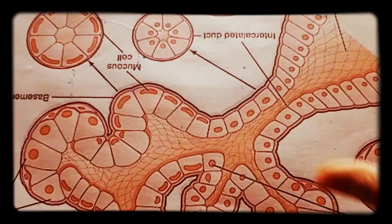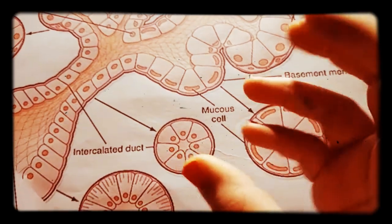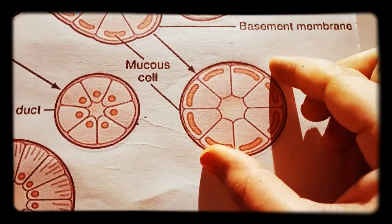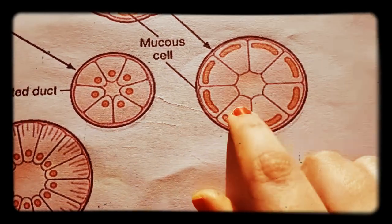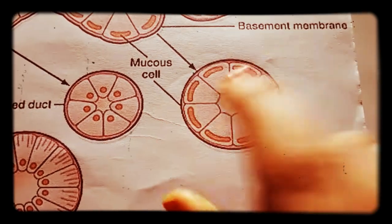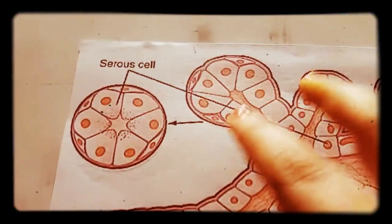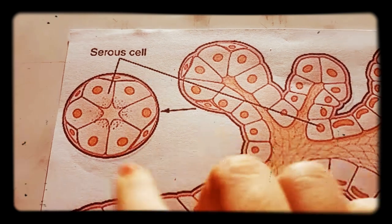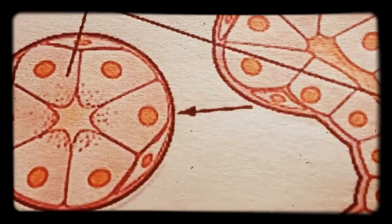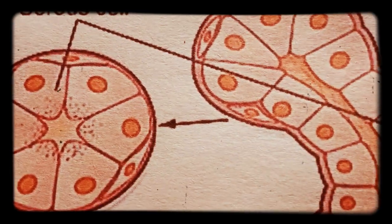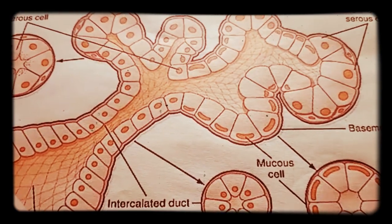Finally, depending on the type of secretion, glands are classified as mucous or serous. Mucous gland cells have a flat nucleus pushed to the base, and the cytoplasm has a hazy appearance due to mucus secretion. Serous gland cells have an oval, centrally placed nucleus and eosinophilic-staining granules visible in the cytoplasm. This concludes the revision of glands.